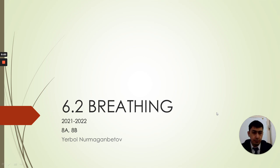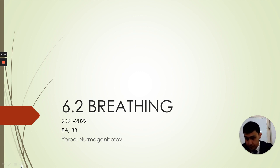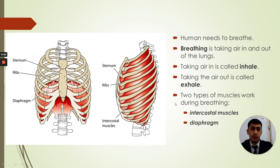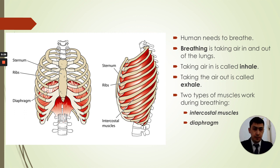Hello guys, today we will study about breathing — chapter 6.2. So, how do we breathe? We think that just air comes in and out, but it actually involves a lot of organs and muscles. Humans need to breathe by taking air in and out of the lungs. Taking air in is called inhale, and when you take air out it's called exhale.